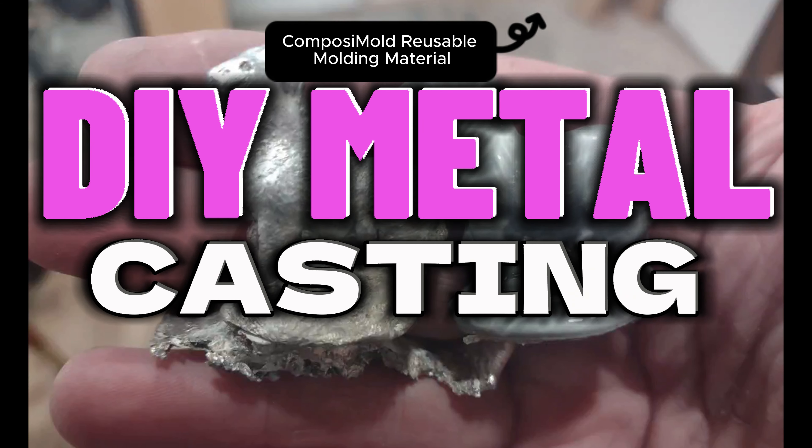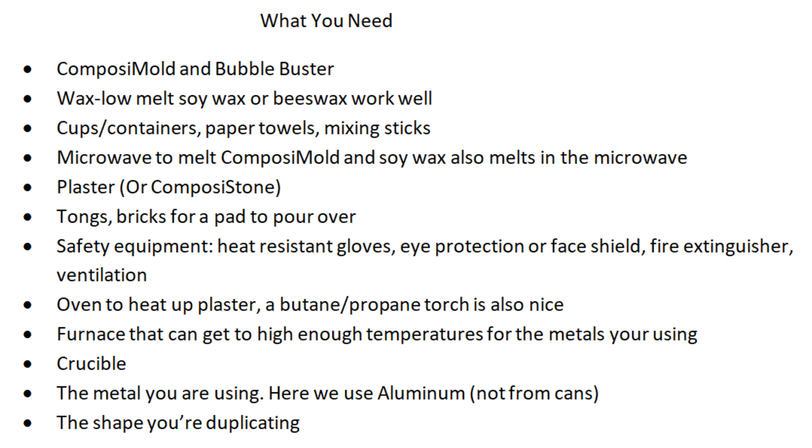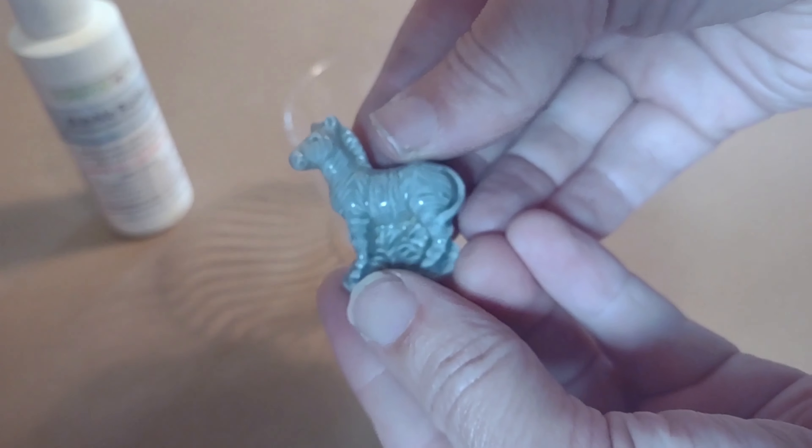Here are instructions for casting aluminum using the lost wax process with ComposiMold used to create the plaster or ComposiStone mold. Be warned the process is dangerous and it's hard. Safety precautions should be followed to prevent accidents and injuries and be sure to use proper ventilation when working with these materials. This process is challenging so be careful.